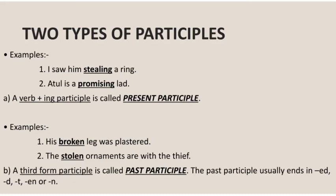Now let us see examples of the past participle. Example 1: 'His broken leg was plastered.' Example 2: 'The stolen ornaments are with the thief.' In these examples, the words 'broken' and 'stolen' denote an action or state that is completed and no longer in progress — so they are past participles. In a past participle, the verb is generally in its third form, usually ending in -ED, -D, -T, -EN, or -N. Since 'broken' and 'stolen' end in -N, they are past participles.